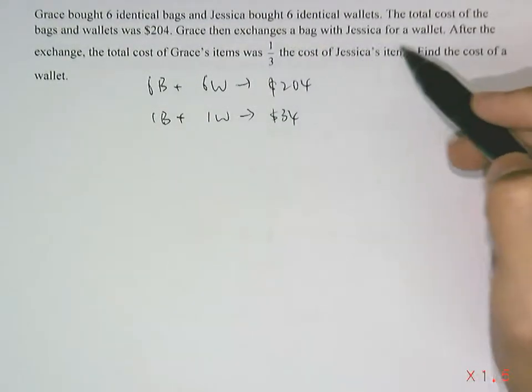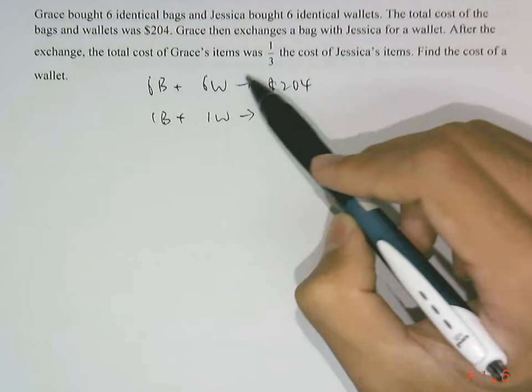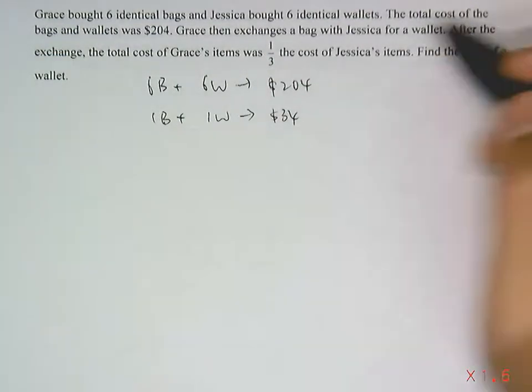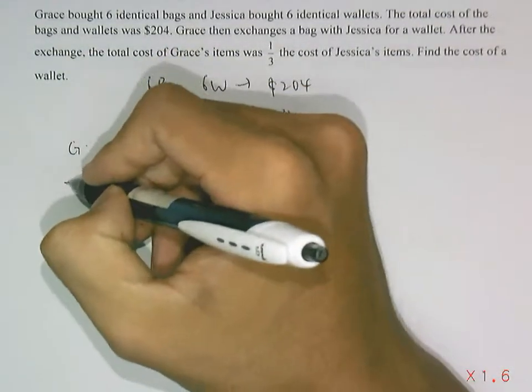Grace then exchanges a bag with Jessica for a wallet. After the exchange, the total cost of Grace's items was one-third the cost of Jessica's items. Find the cost of a wallet.